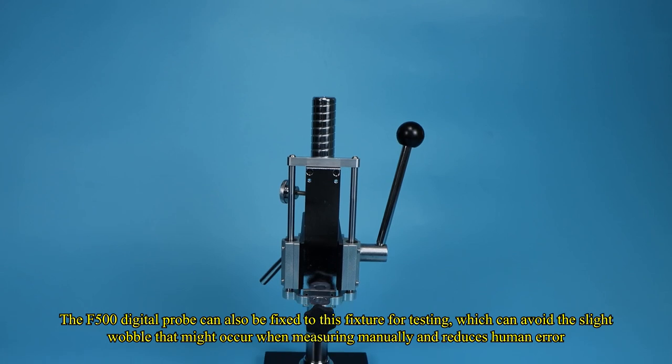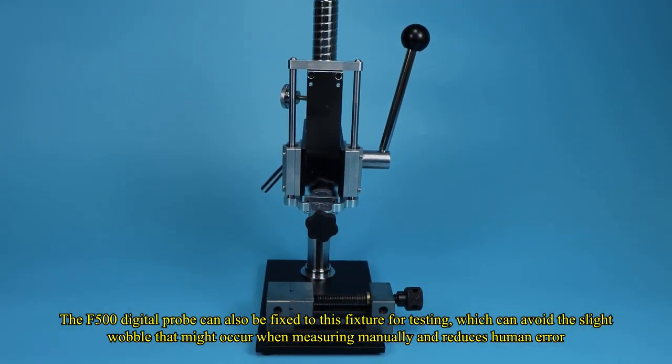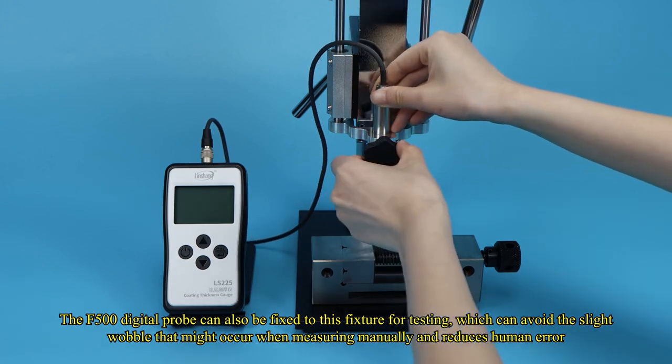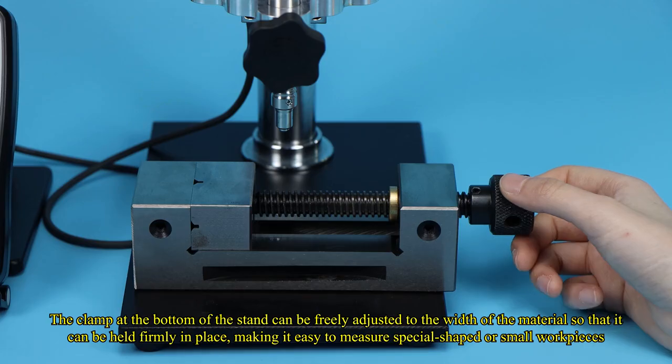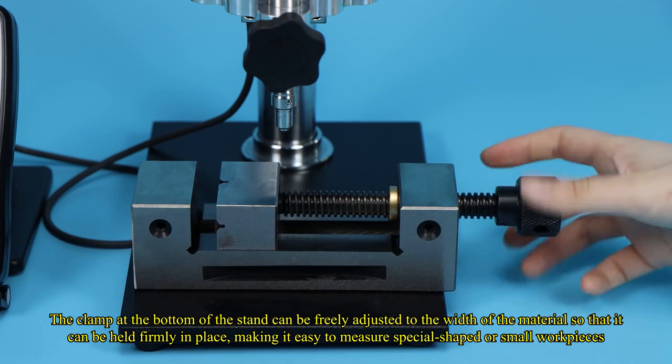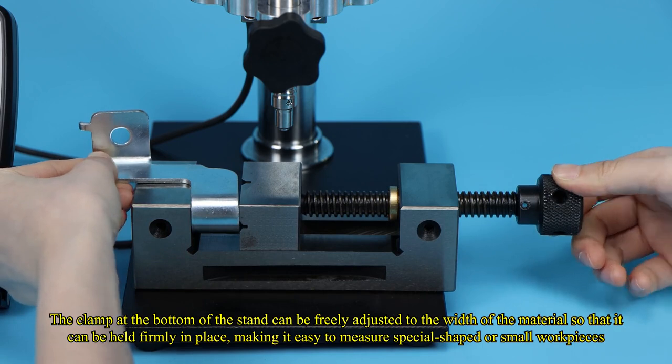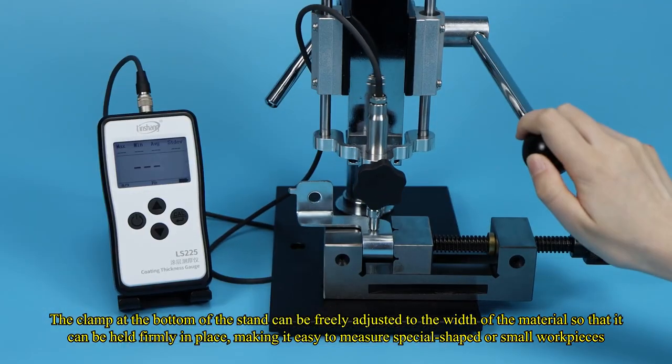The F500 digital probe can also be fixed to this fixture for testing, which can avoid the slight wobble that might occur when measuring manually and reduces human error. The clamp at the bottom of the stand can be freely adjusted to the width of the material so that it can be held firmly in place, making it easy to measure special shaped or small workpieces.